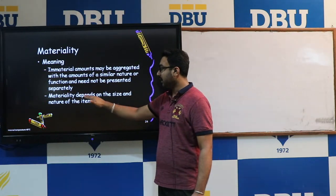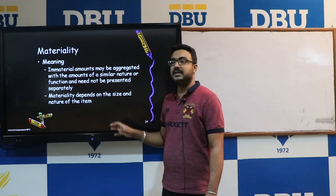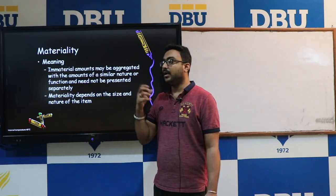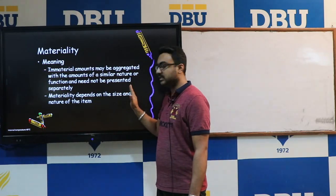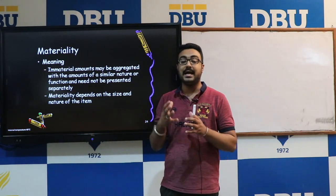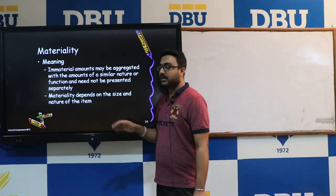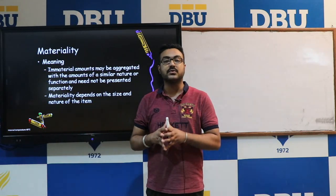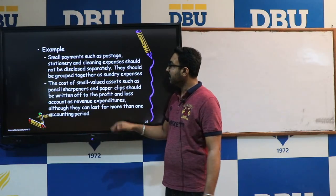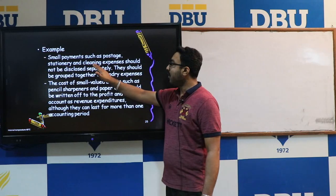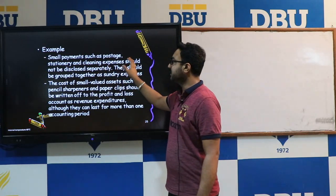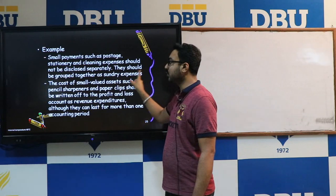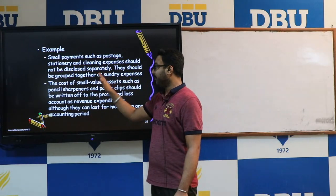Materiality depends upon the size as well as the nature of the item. You are required to identify what is the exact size or what is the exact nature of the item which you want to record in your books of accounts. For example, small payments such as postage charges, stationary charges, and cleaning expenses should not be disclosed separately.